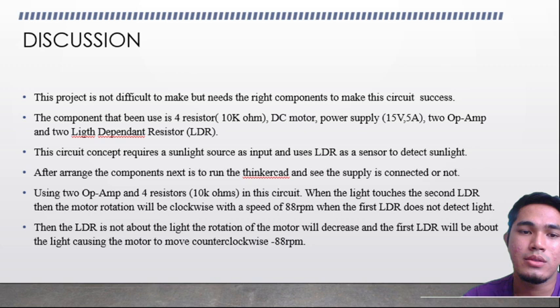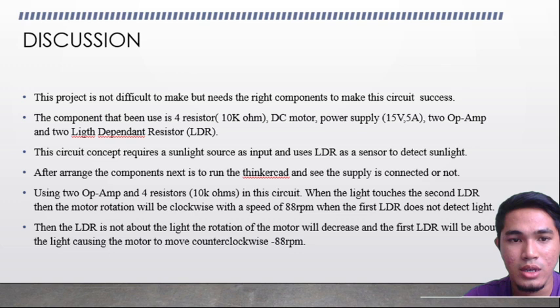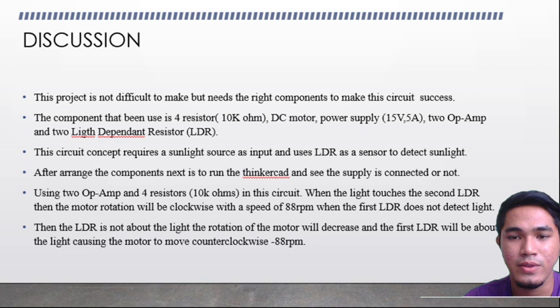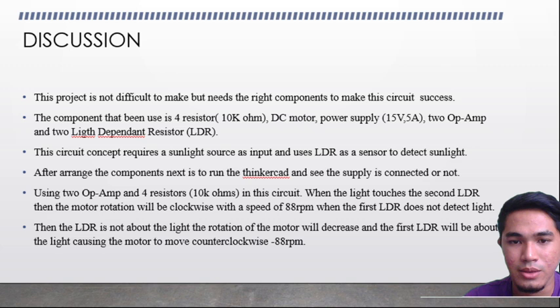For the discussion. This project is not difficult to make but needs the right components to make this circuit successful. The components used are 4 resistors of 10k ohms, DC power supply of 5V and 5 ampere, 2 op-amp amplifiers, and 2 light dependent resistors (LDR). This circuit concept requires a sunlight source as input and uses LDRs as sensors to detect sunlight. To arrange the components, run the simulation in Tinkercad and check whether the supply is connected.